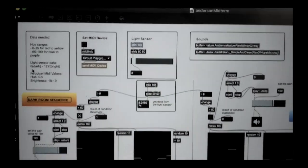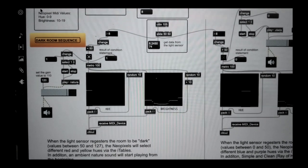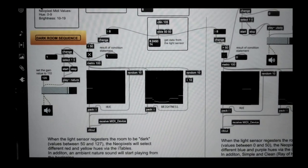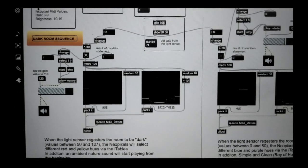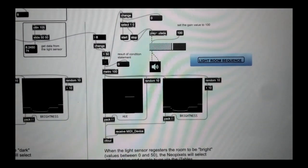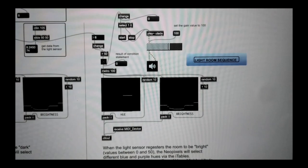The logic I use is if the MIDI data from the light sensor is less than 50, play a nature sound and have the lights give off red and yellow hues. Otherwise play a song file and have the lights give off blue and purple hues.